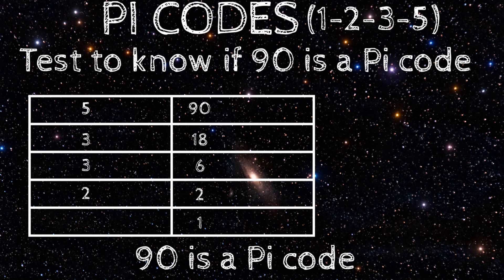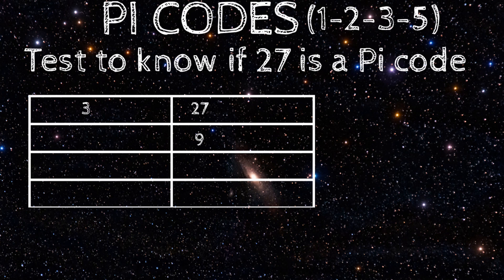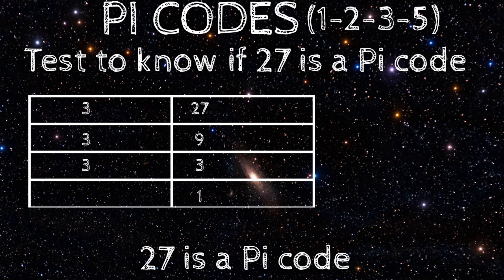Next, testing if 27 is a pi code. Starting with 3. 3 divide 27 to give 9. 3 divide 9 to give 3. 3 divide 3 to give 1. The division ends in 1, therefore 27 is a pi code.